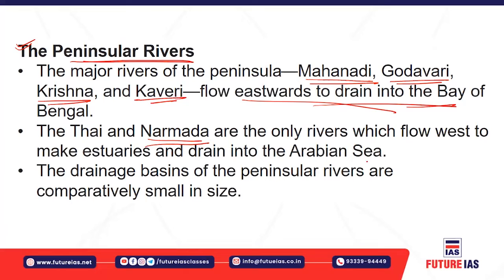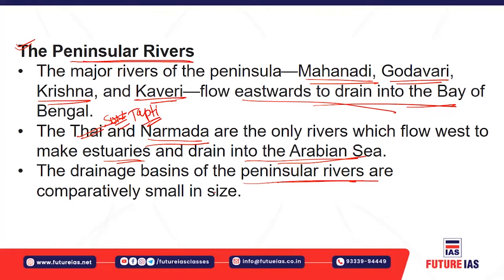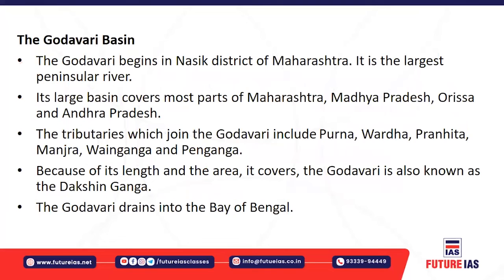Narmada and Tapi are the only rivers that flow westward, forming estuaries and draining into the Arabian Sea. The drainage basins of peninsular rivers are comparatively smaller because they carry less water and fewer sediments compared to the Himalayan rivers.